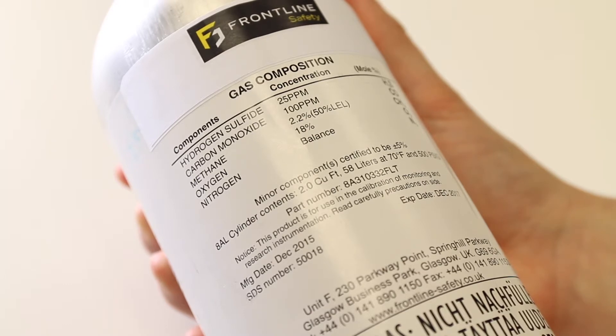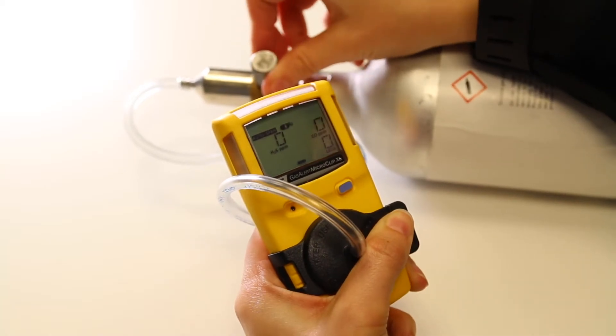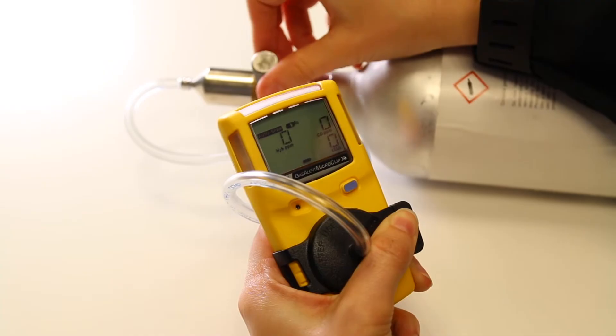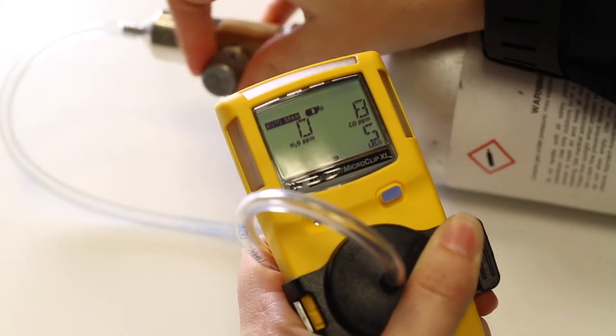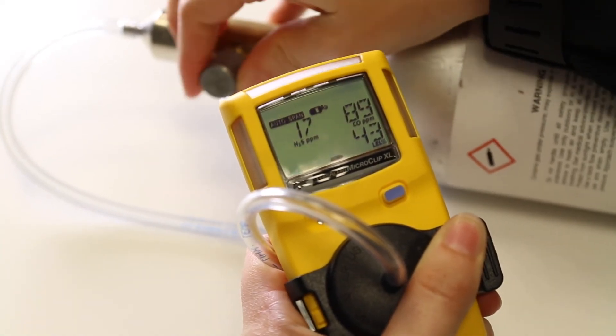You're now ready to bump test your MicroClip XL. Attach the tubing to the adapter, which is in turn attached to the regulator and calibration gas bottle. Attach the calibration clip to the monitor.